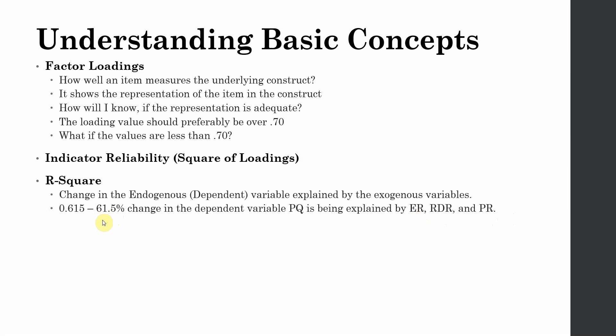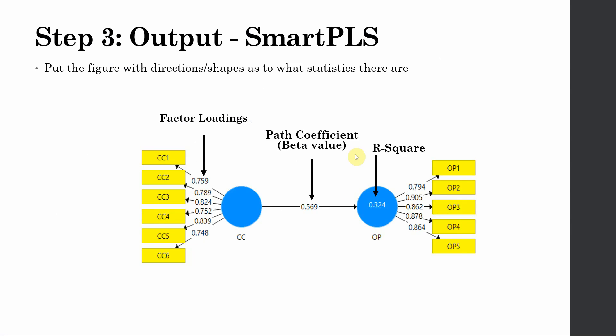So in this case, 61.5% change in the dependent variable PQ is being explained by these three variables. Now in this case, in this example, I've got 0.324 as my R-square value and in this case, 32.4% change in organizational performance is being accounted by collaborative culture.